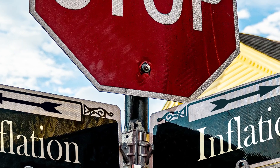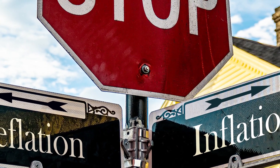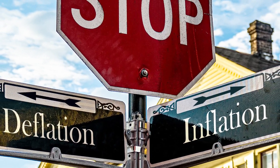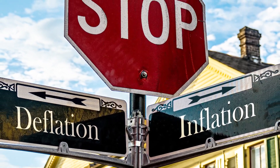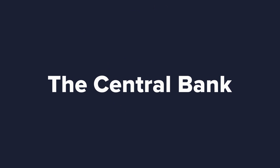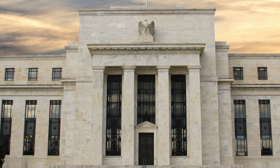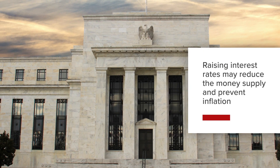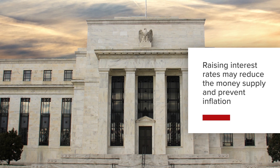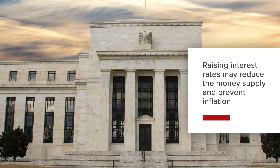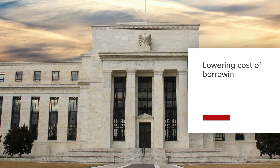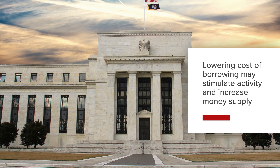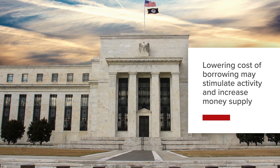Falling prices are likely to reduce the level of national output and potentially lead to deflation. Falling prices can be more difficult to remedy than rising prices. A country's central bank is generally accountable for monitoring macroeconomic variables and setting monetary policy accordingly. Raising interest rates can have the effect of reducing the money supply and preventing inflation. Conversely, by lowering the cost of borrowing, the central bank can stimulate activity and increase money supply and ultimately economic activity.